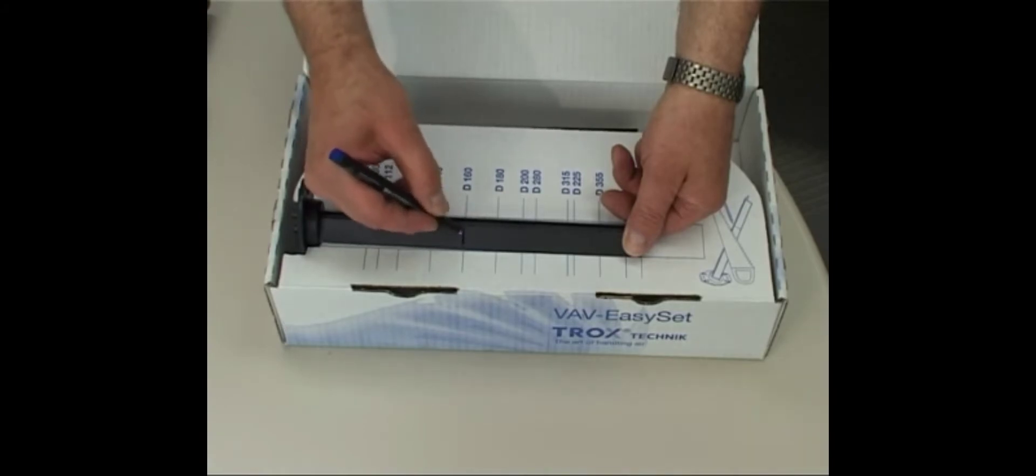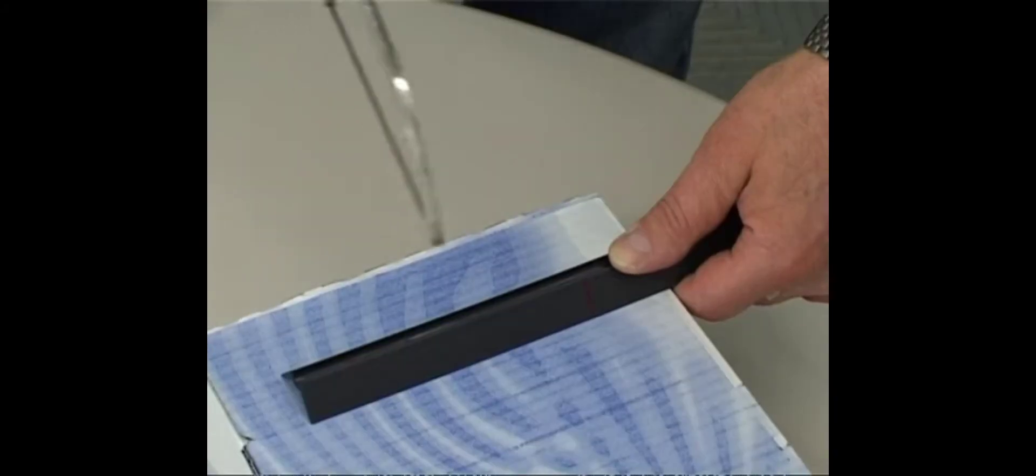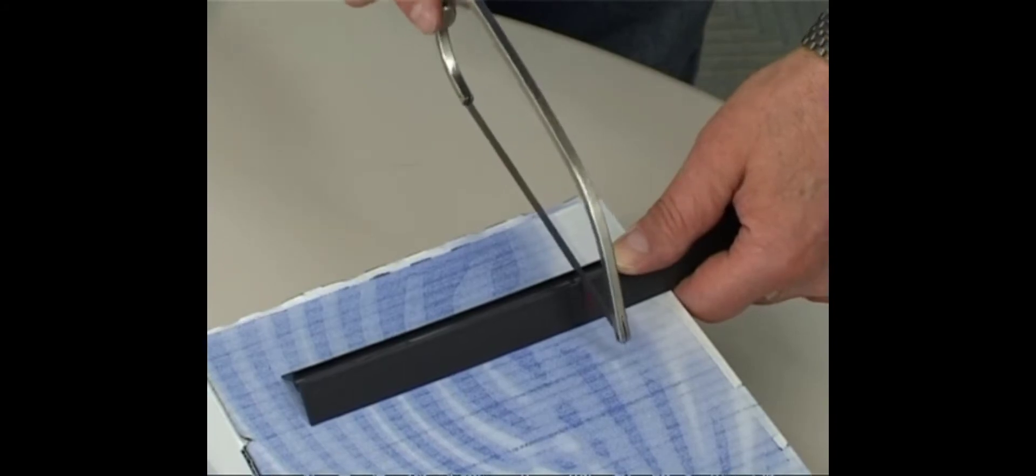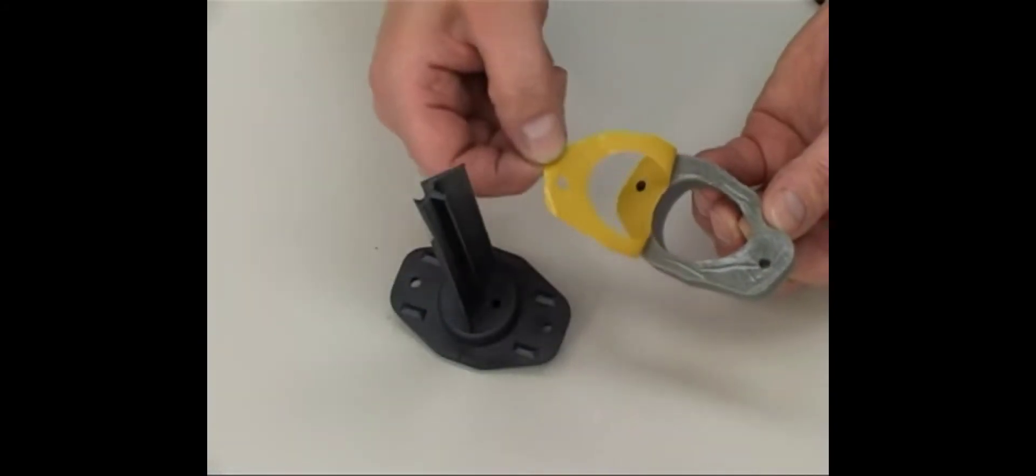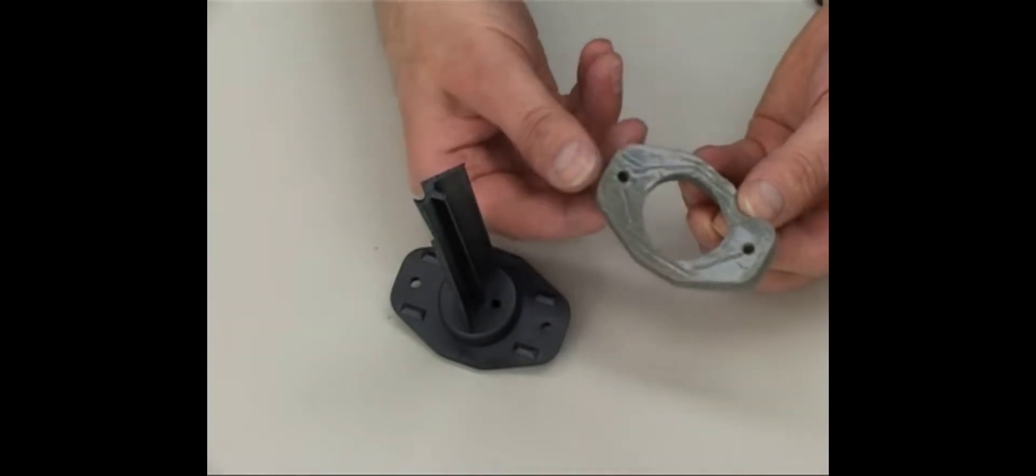A scale on the cardboard package of the Easy-Set assists to establish the correct length. Next, the provided seal must be mounted on the sensor.